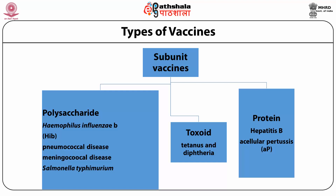Polysaccharide subunit vaccines: some bacteria that infect human cells are protected by a polysaccharide capsule which helps the organism evade the human defense system. These vaccines create an immune response against these polysaccharide molecules. They include Haemophilus influenzae type B vaccine, pneumococcal disease, meningococcal disease, and Salmonella typhi — which is also a polysaccharide-based subunit vaccine.